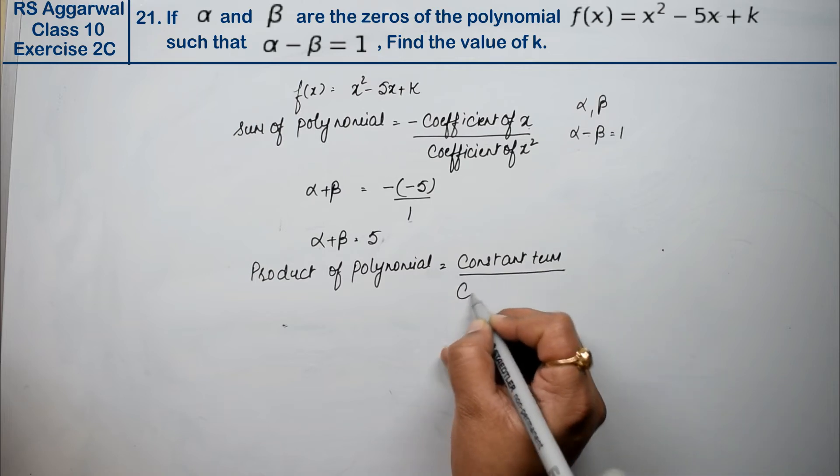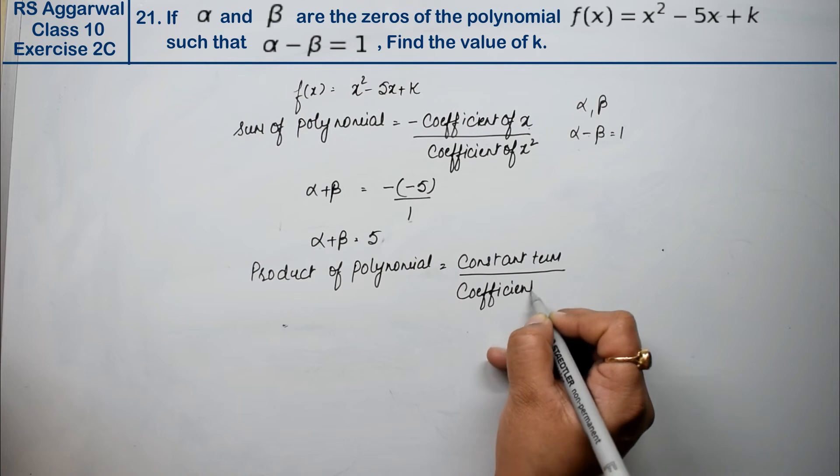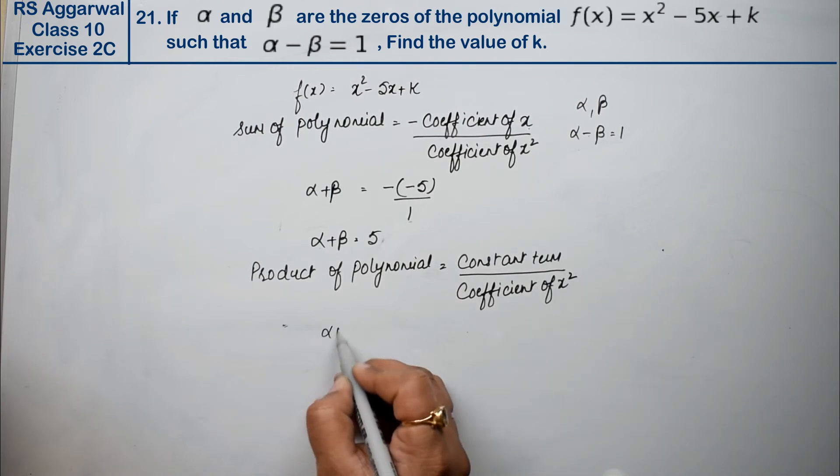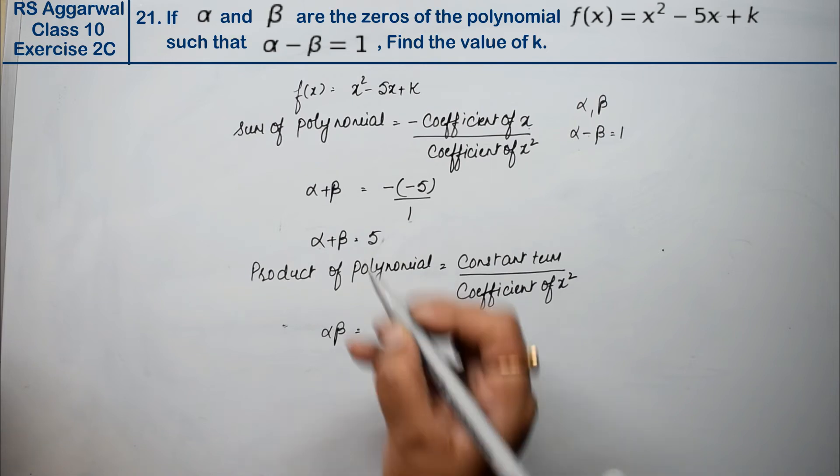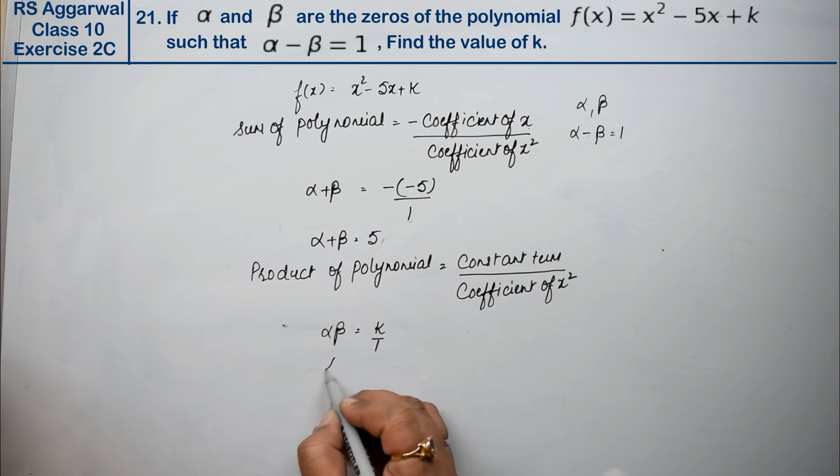So αβ equals the constant term k upon coefficient of x², which is 1. Therefore αβ = k.